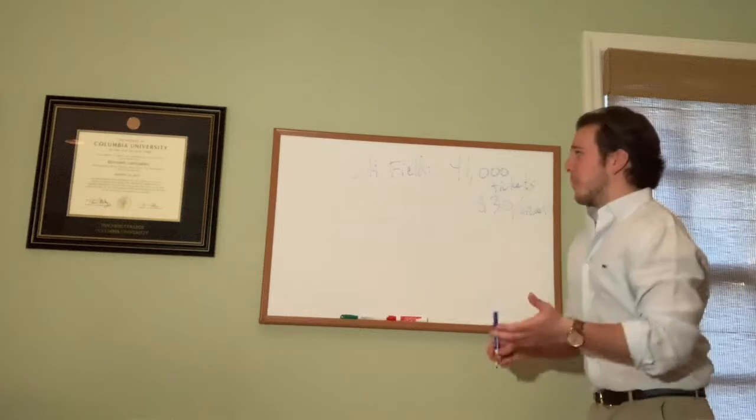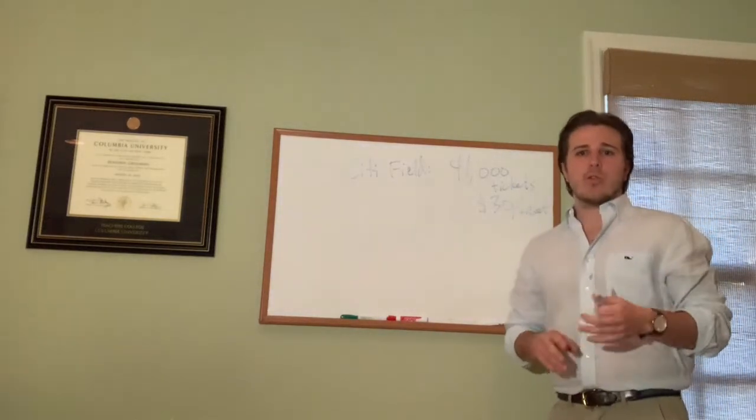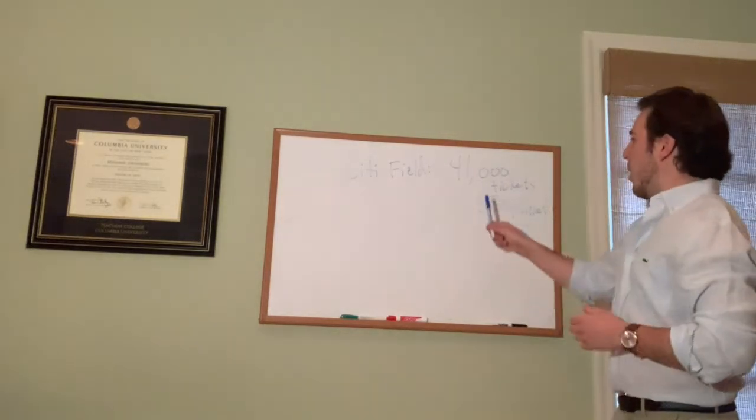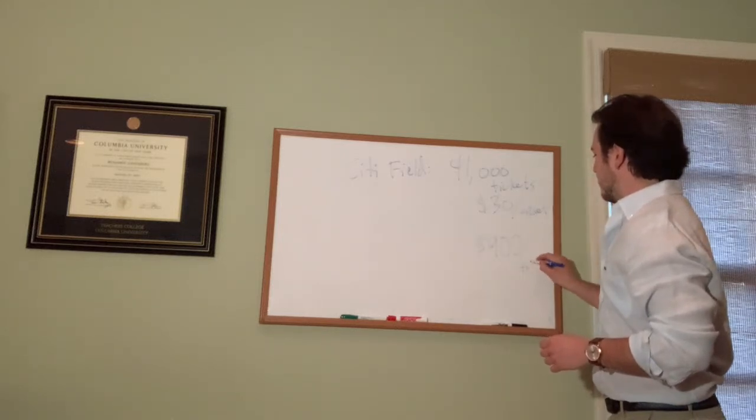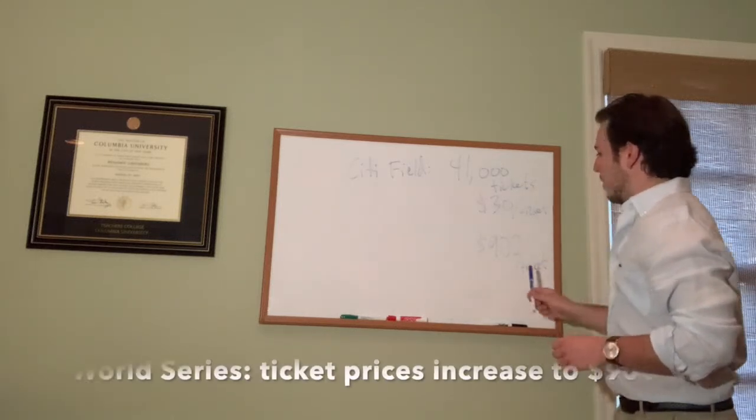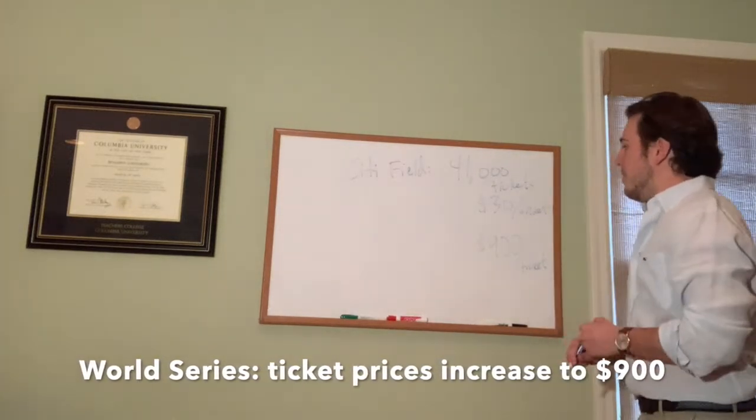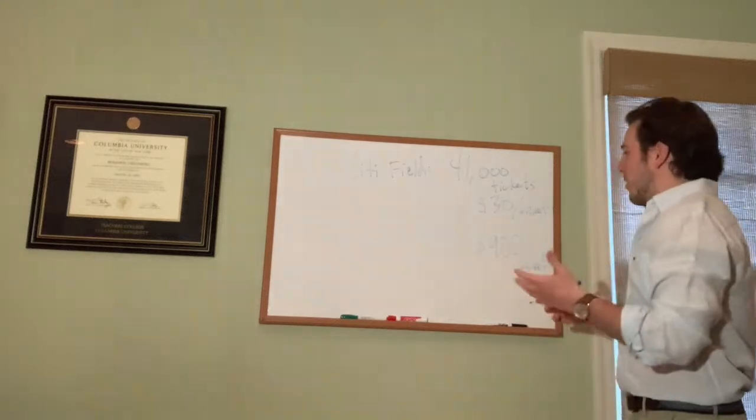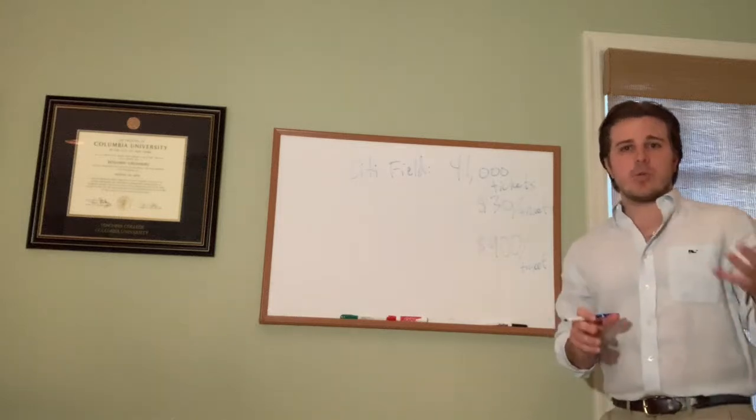They're selling 41,000 tickets at Citi Field per night. Now, what happens if the price of tickets went up by a lot? This actually happened when the Mets were in the World Series in 2015. The ticket price went up from $30 per ticket up to $900 per ticket. Crazy, right? Well, yeah, it is. But it's the World Series. So what could the Mets do?